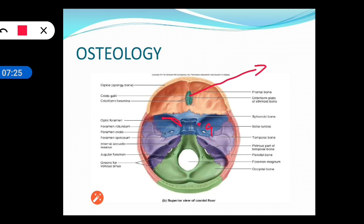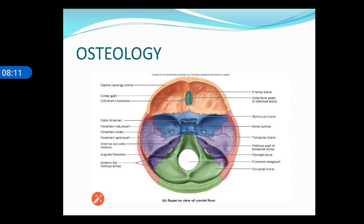Additional sphenoid landmarks include the anterior clinoid process and the posterior clinoid process. In between the posterior clinoid processes is the dorsum sellae, and in between the anterior clinoid processes is the tuberculum sellae. The remaining osteology will be reviewed as needed.